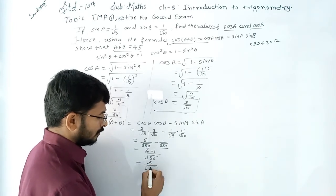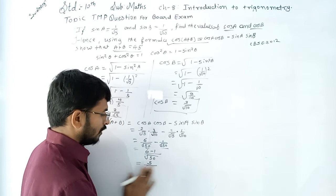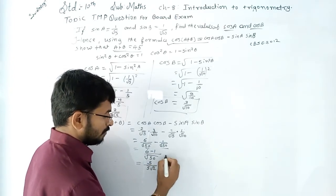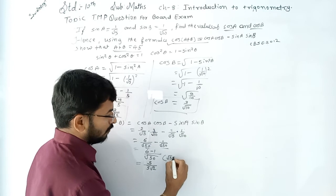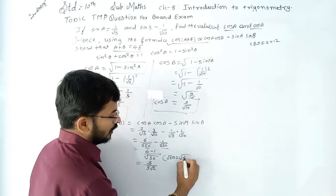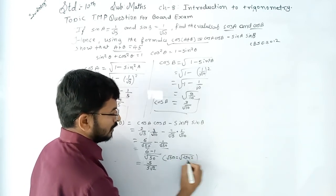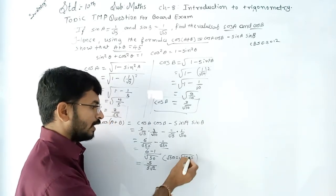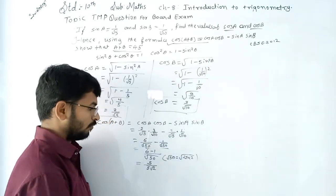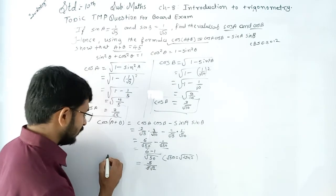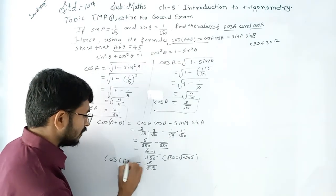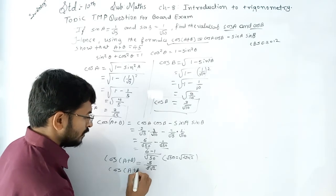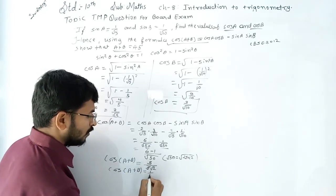Now, √50 = √(25 × 2) = 5√2. So we have 5 upon 5√2. Cancelling the 5s, cos(A+B) is equal to 1 upon root 2.